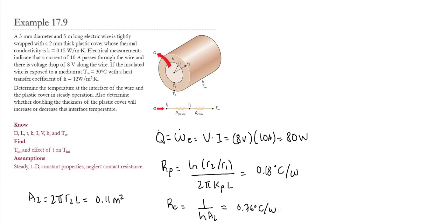So now that we have both of the resistances, we could calculate the total resistance, the addition of both of them. So the total resistance becomes 0.94 Celsius over watts.